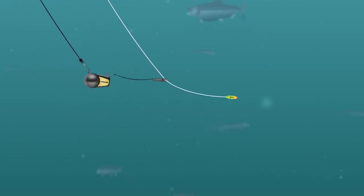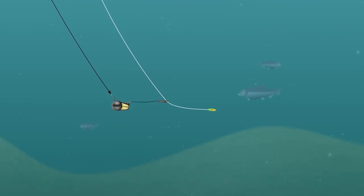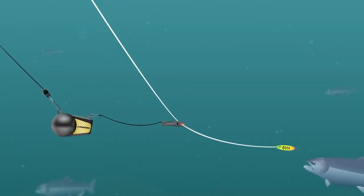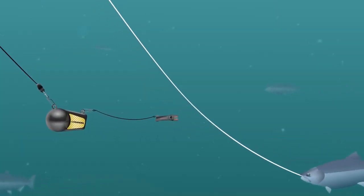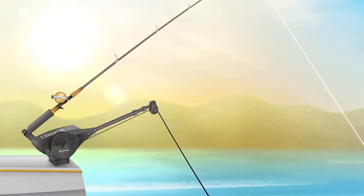Once a fish takes the lure, the pinch release lets go of your fishing line and your rod will spring up, telling you the fish is on. Remove your rod from the holder.